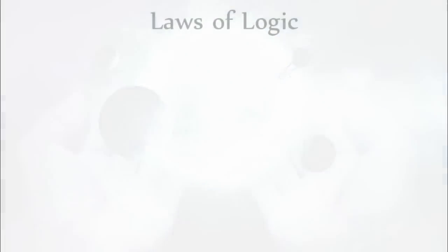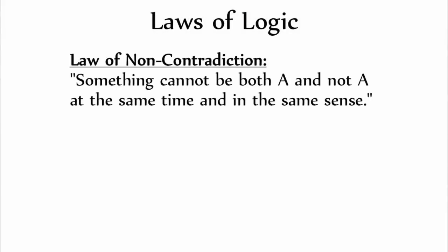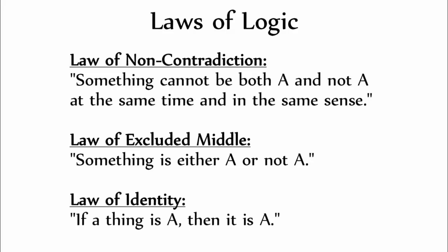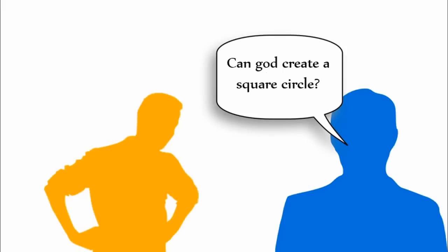By the following laws of logic, we know: Something cannot be both A and not A at the same time and in the same sense, as stated by the law of non-contradiction. Something is either A or not A, as stated by the law of excluded middle. And if a thing is A, then it is A, as stated by the law of identity.